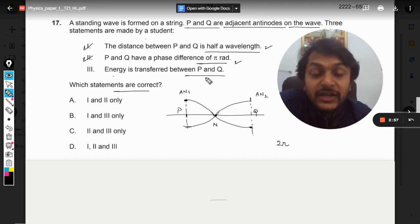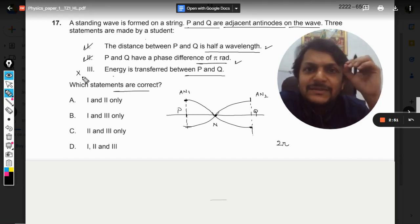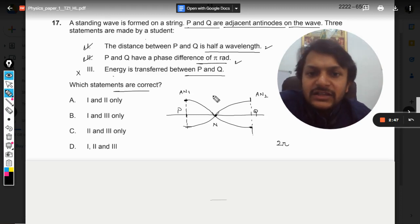Now, energy is transferred between P and Q. Well, absolutely this statement is wrong because that is what is the basic characteristic of a standing wave. What is a standing wave? This standing wave is a wave in which a particle which is a node will never have an amplitude. It will always be 0 and it will never be having any energy there.